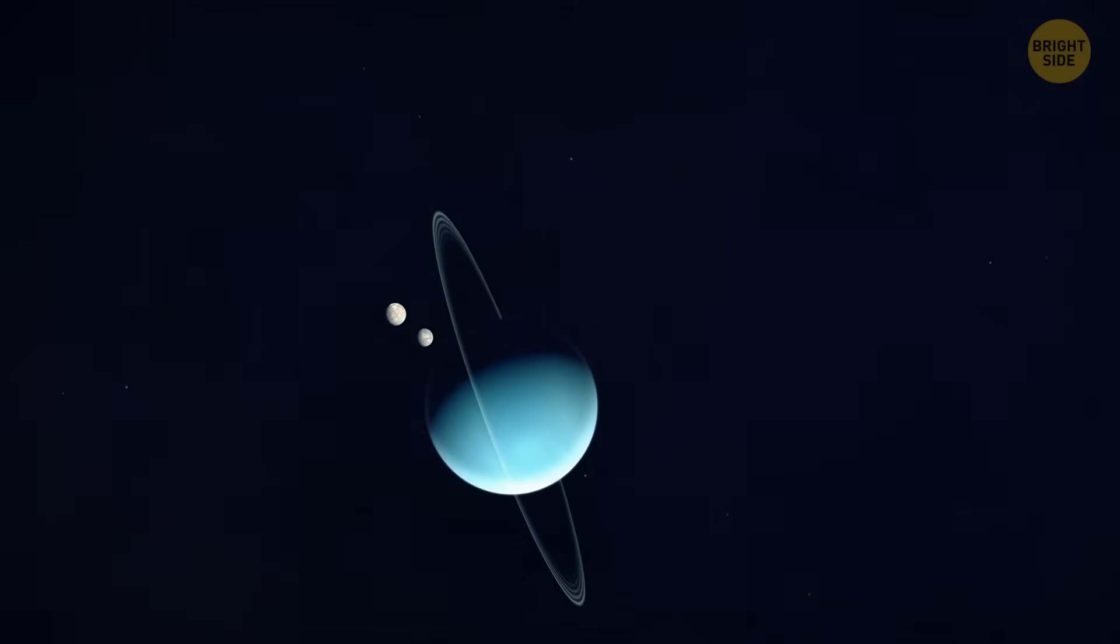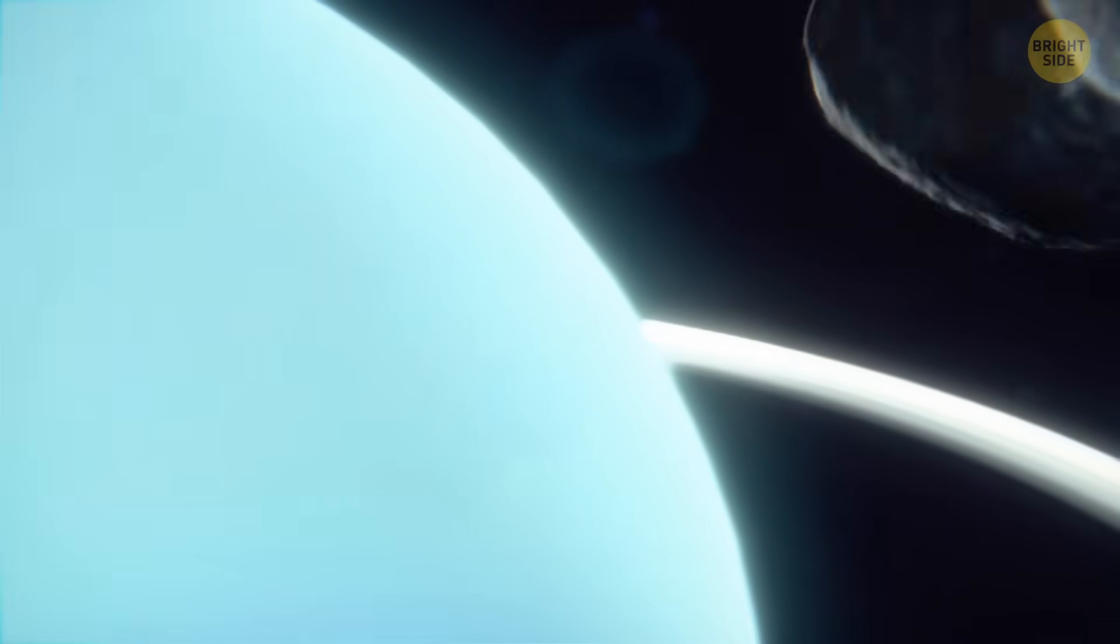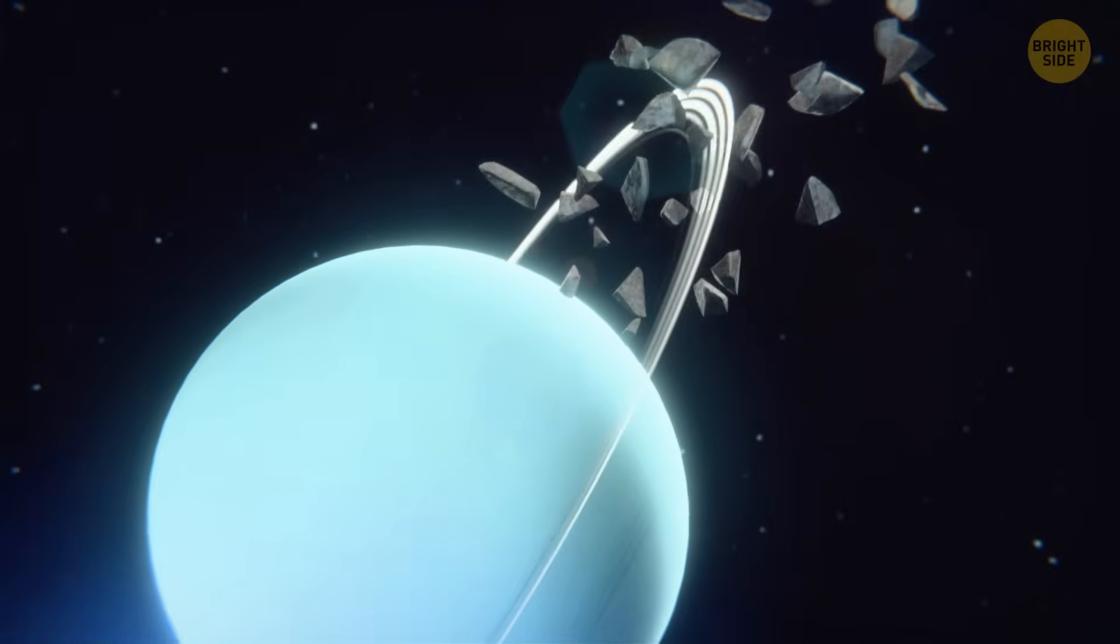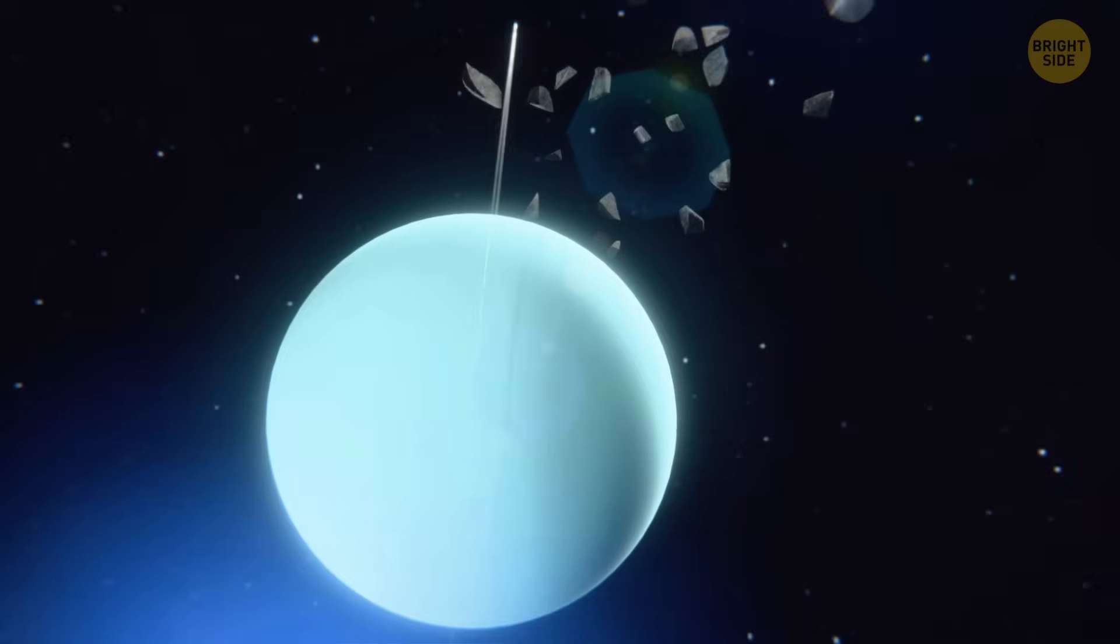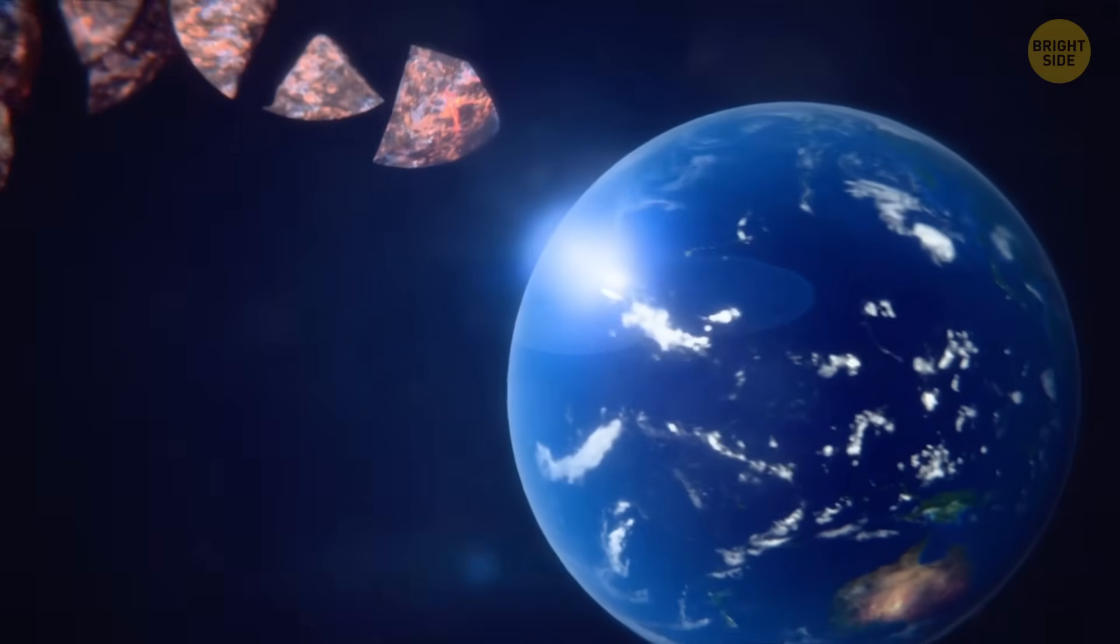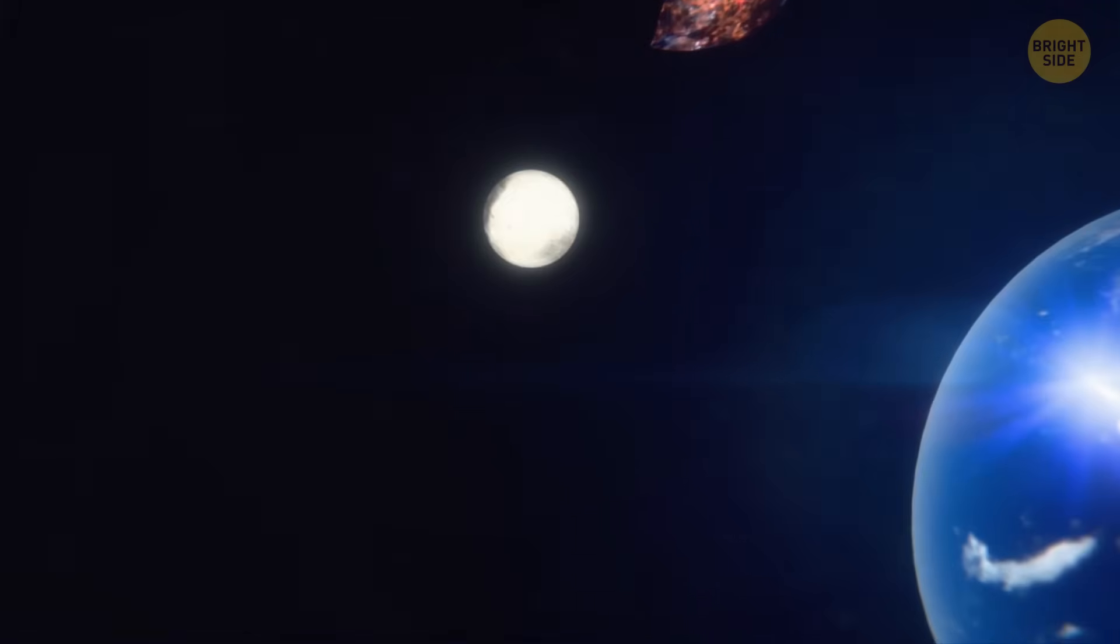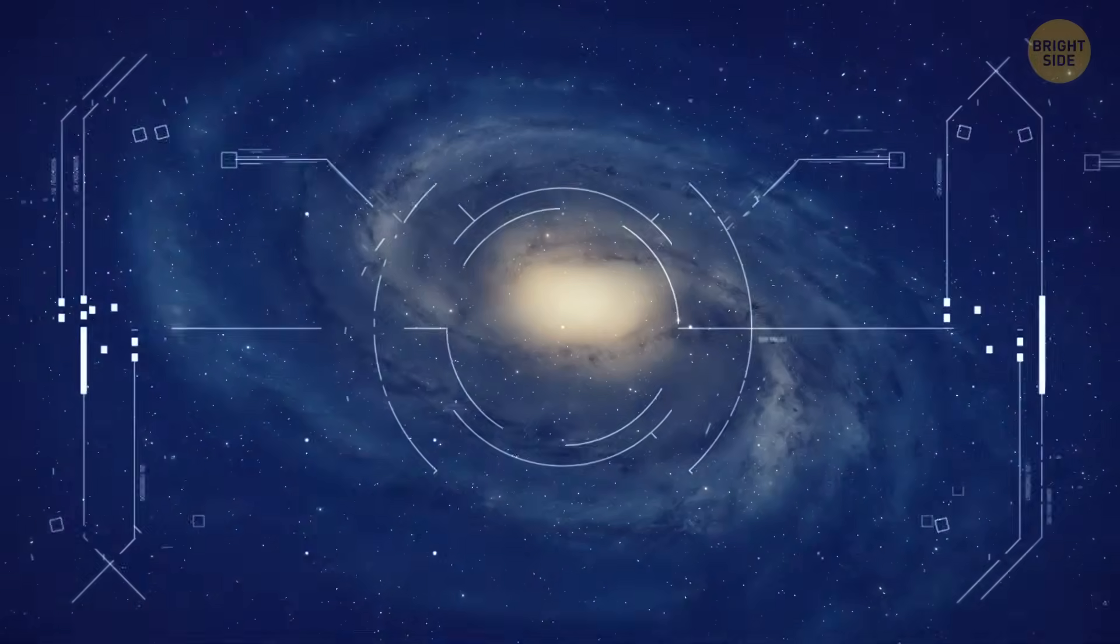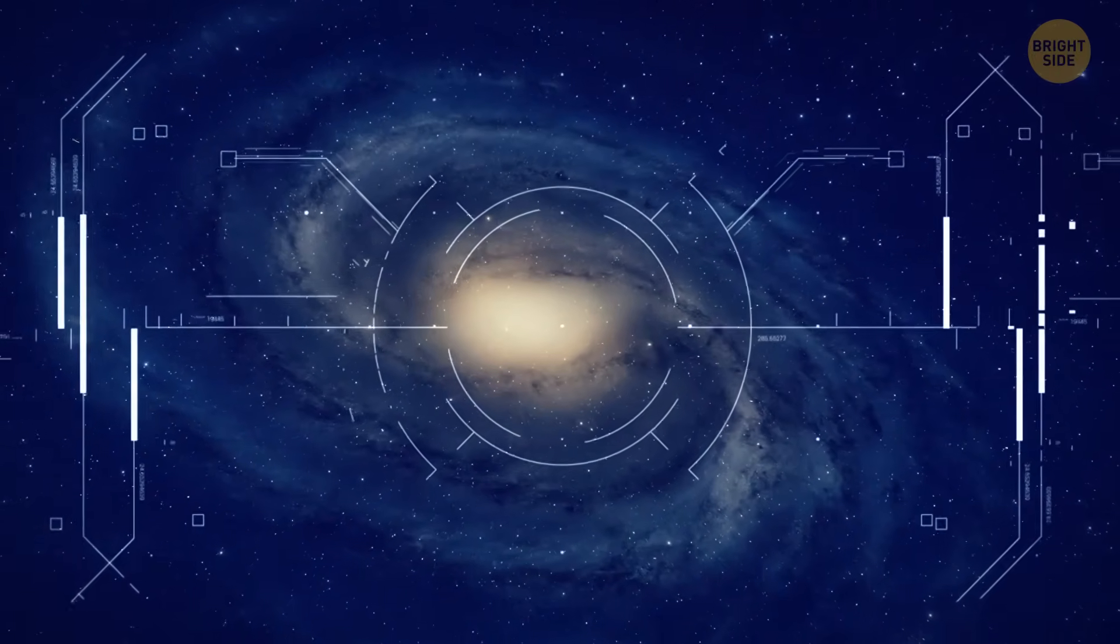And why is Uranus so tilted, you ask? Scientists once thought this was due to some kind of collision. They thought that something gigantic crashed into Uranus, something like what happened to our Earth. A dwarf planet crashed into it, the Earth tilted slightly, and the Moon was born from the remnants of the collision. But this theory had a problem.